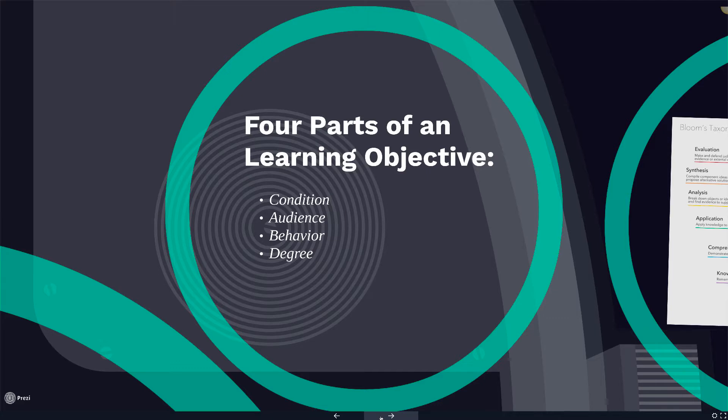So now that we understand the basic requirements of a good learning objective, how do we write clear and measurable learning objectives? A good learning objective has four parts: it describes a condition of learning, it identifies the audience, it describes a measurable behavior using Bloom's taxonomy, and it defines the degree to which the learning outcome will be met.